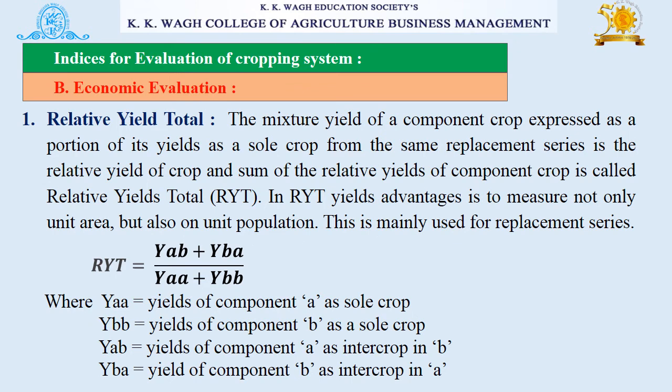Now we will see economic evaluation. First is relative yield total. The mixture yield of a component crop expressed as a proportion of its yield as a sole crop from the same replacement series is the relative yield of that crop, and the sum of the relative yields of all component crops is called the relative yield total. It is represented by the given formula.